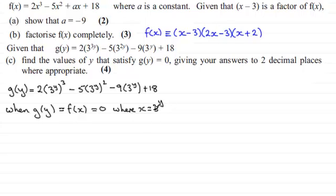So when we have g(y) equaling 0, this will be exactly the same as putting f(x) equal to 0, where x is going to be equal to 3 to the power y. So if that's the case, we already know that if f(x) was equal to 0, then each of these factors would equal 0. So let's just put that down. So we would therefore have x minus 3 would equal 0, or the other factor, 2x minus 3, that would equal 0, or x plus 2 would equal 0.